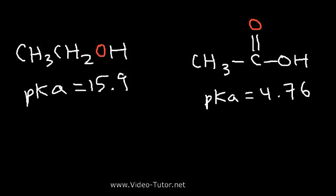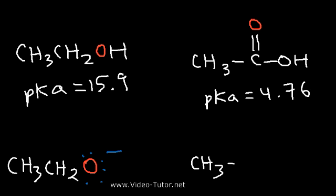But now, why is acetic acid so much more acidic than ethanol? There's two reasons for that. But before we get into those reasons, let's talk about the conjugate base of each of these molecules. To draw the conjugate base, simply remove a hydrogen and add a negative charge. The conjugate base of ethanol is known as ethoxide. And the conjugate base for acetic acid is the acetate ion.